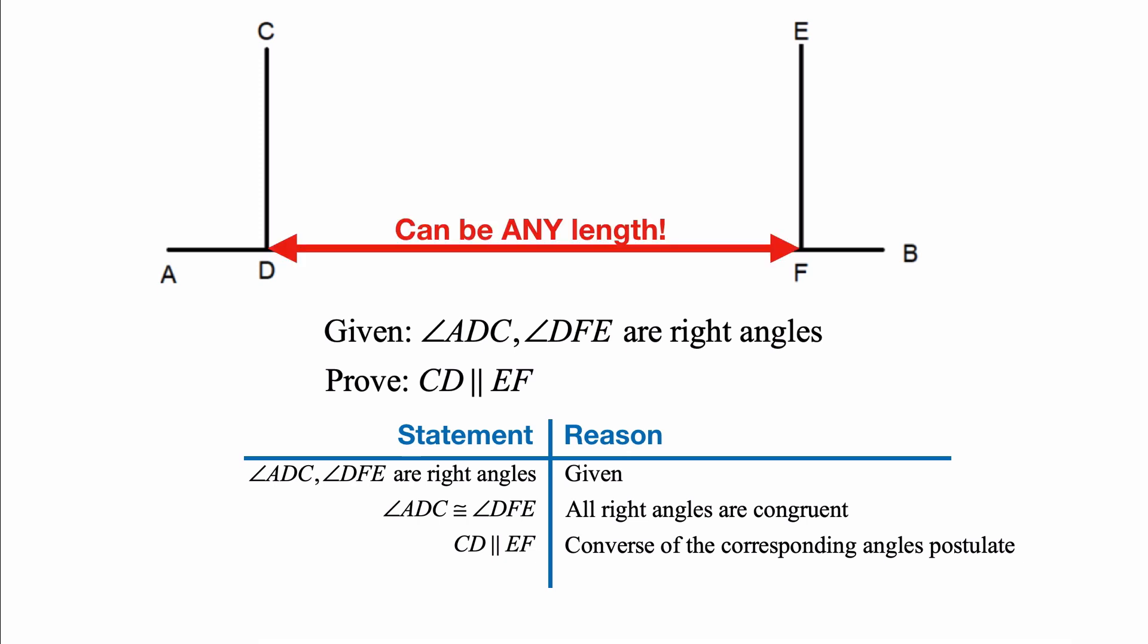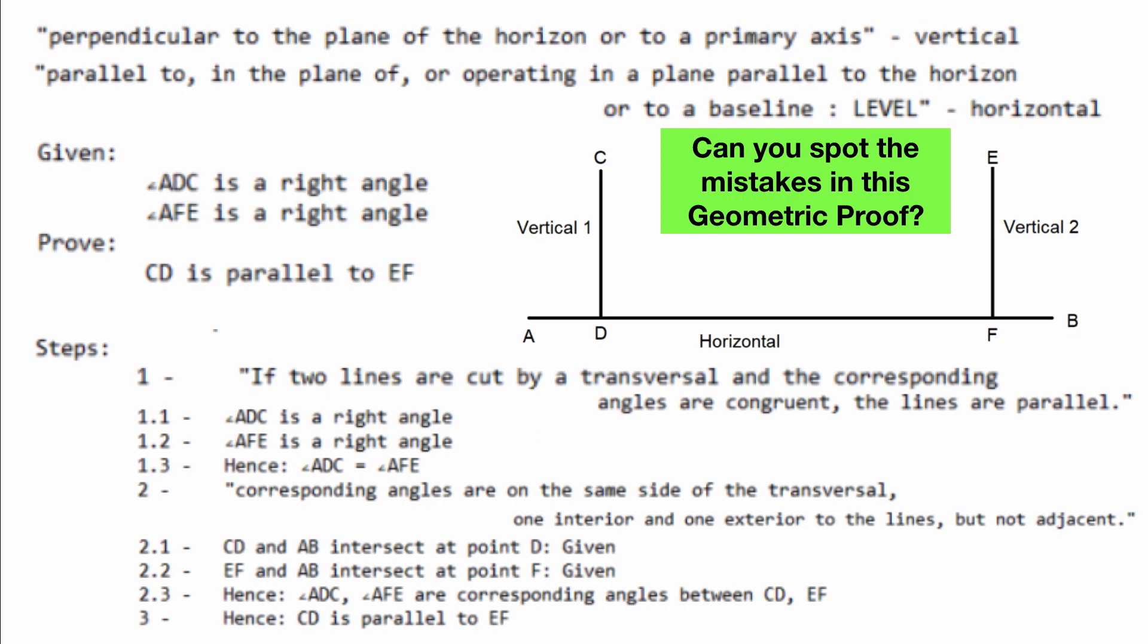And here's the important part. Segment DF can be any length, from one inch to a hundred miles or more, and the two uprights will still be parallel. This is because, in Euclidean geometry, all diagrams are infinitely scalable. Okay, let's see if I've given you enough clues to find out everything that's wrong with this geometric proof. But before we do that, let's take a tour of some books from my home library.